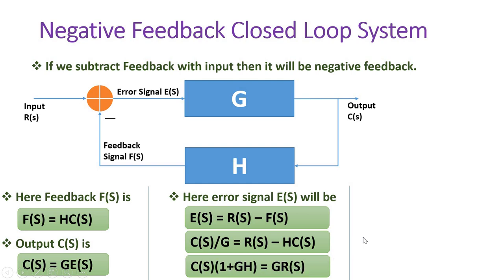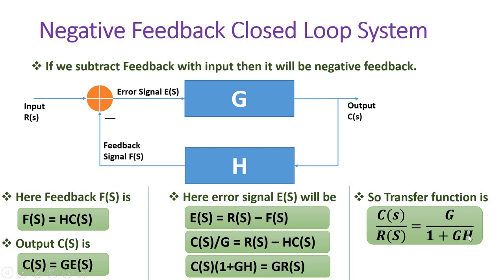Based on this equation, the transfer function C(S)/R(S) equals G divided by (1 + GH), where G is the gain of the system and H is the gain of the feedback link. One should remember this negative feedback closed loop gain formula: G/(1 + GH). This formula is also used in block diagram reduction. In negative feedback, the feedback signal is subtracted from the input, or equivalently the feedback signal is out of phase with the input.